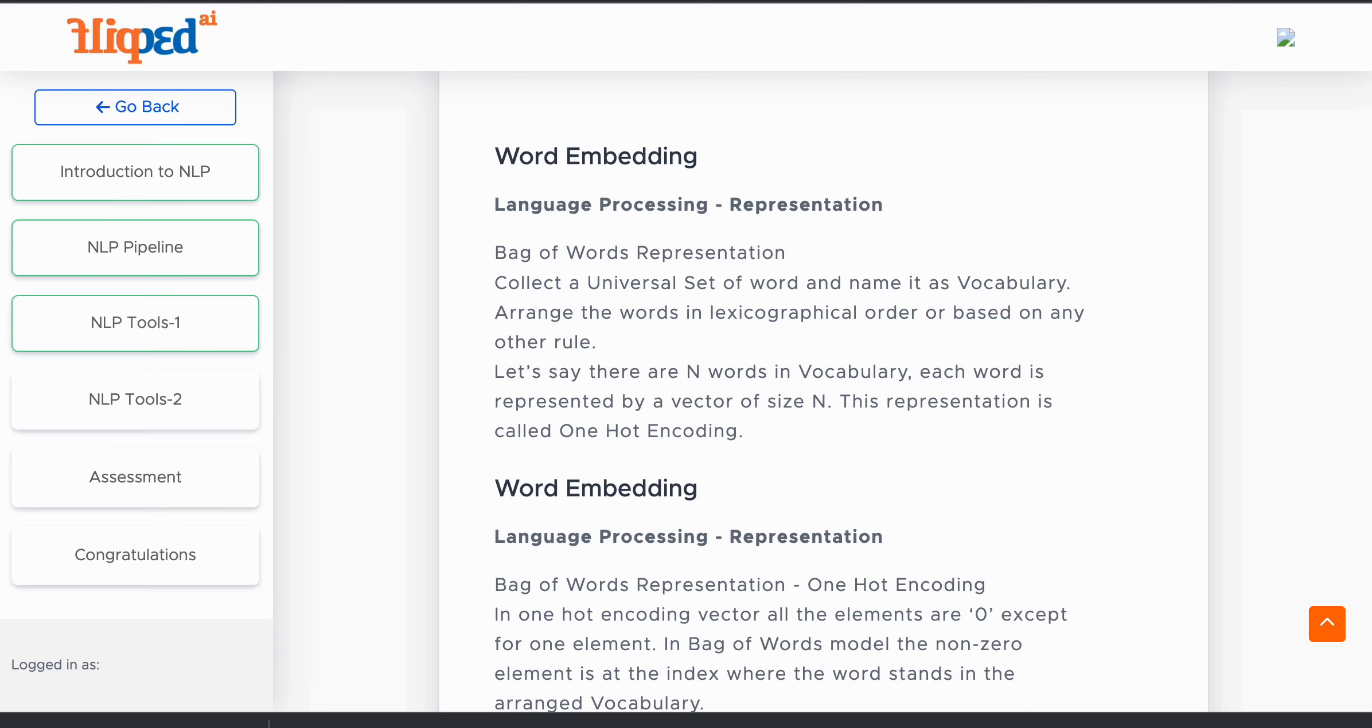It assigns a value of 1 to the feature of each sample that corresponds to its original vocabulary.